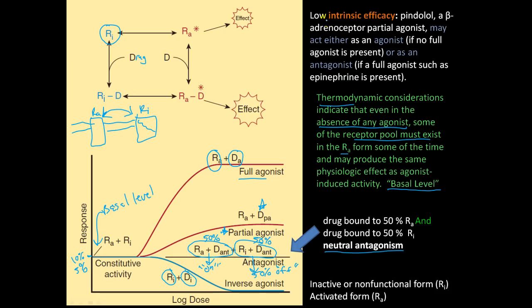There's another concept that's called intrinsic efficacy. So pindolol, a beta-adrenoceptor partial agonist. It may act either as an agonist if no full agonist is present or as an antagonist if a full agonist such as epinephrine is present.